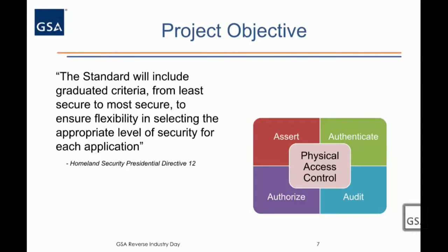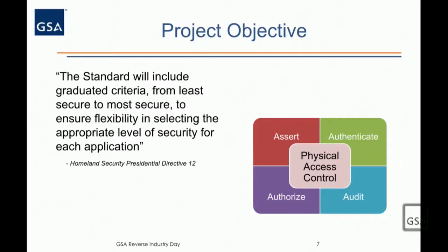When we look at HSPD-12, it focuses on four criteria for the credential and how to obtain it. Right after that is the statement that you have to have graduated criteria — you're managing risk, but risk isn't the same for every space. If someone gets into a janitor closet inadvertently, the risk is pretty low. If they get into a data center, obviously the risk is very high. We need to make sure we're not putting things in the wrong places and not building a Fort Knox where operations are negatively impacted.